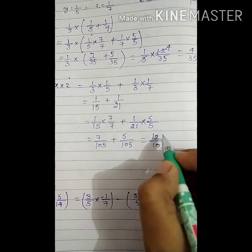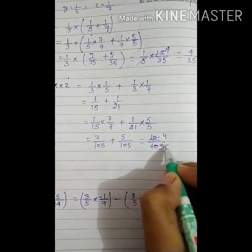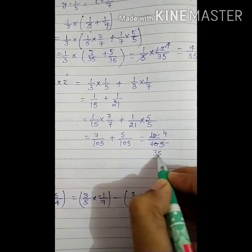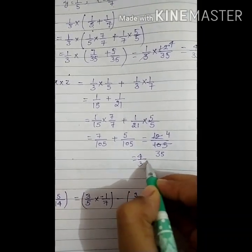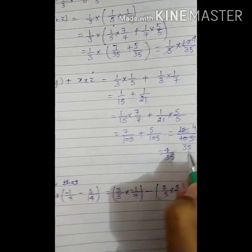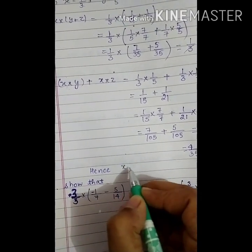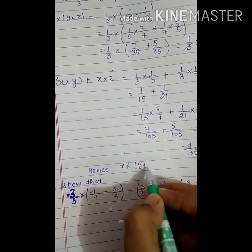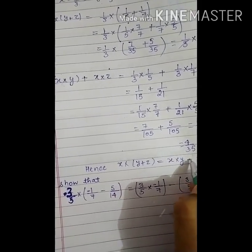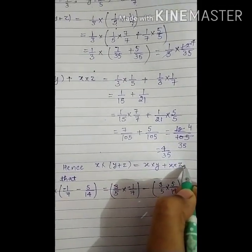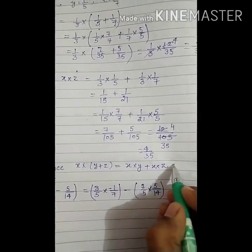Now cancel on the table of 3: 3 fours are 12, and 3 thirty-fives are 105. So the final answer is 4 upon 35. Hence, x multiplied by (y plus z) is equal to x multiplied by y plus x multiplied by z. Distributive property is verified.